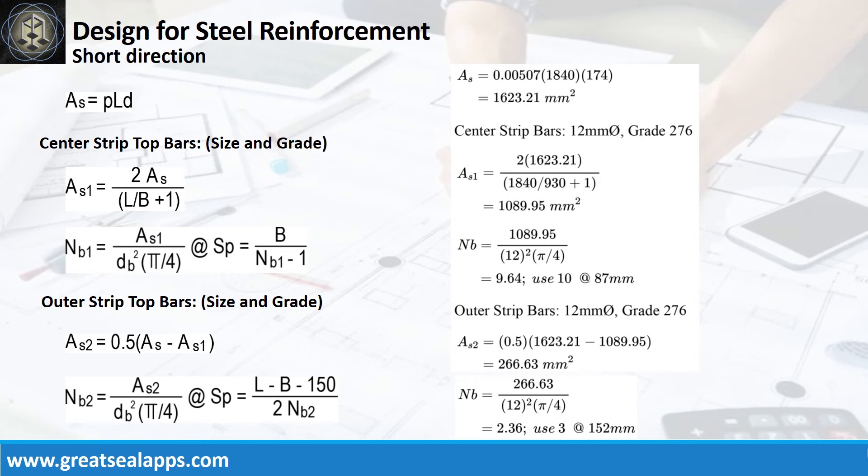The area of steel at center strip is 1089.95 mm squared and the number of bars for 12mm bar is 10. The area of steel at outer strip is 266.63 mm squared and the number of bars for 12mm bar is 3 on each side.